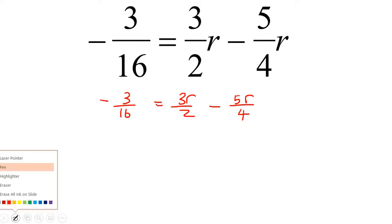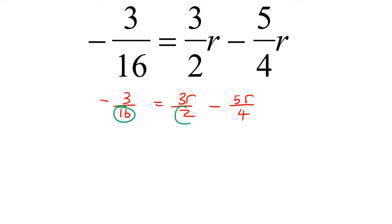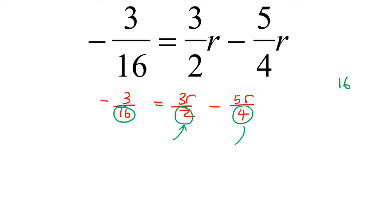Now we look at the numbers at the bottom and want to get them all the same — find a common denominator. Here's a trick: if learners struggle counting in twos and fours, choose the biggest number and count in that one. Since 16 is already a denominator and both 2 and 4 can turn into 16, we can just use 16 as our lowest common denominator.